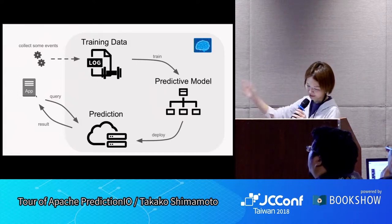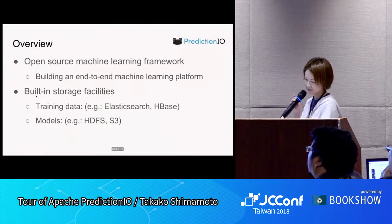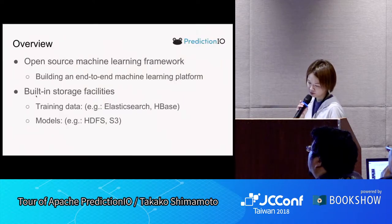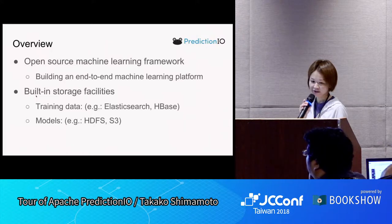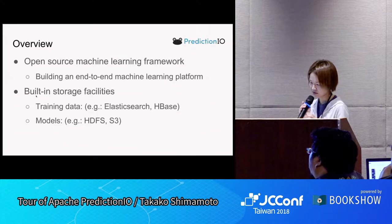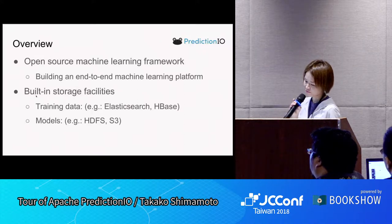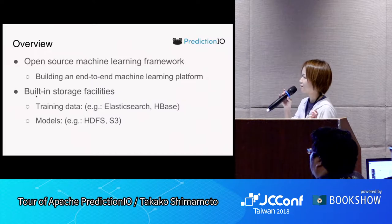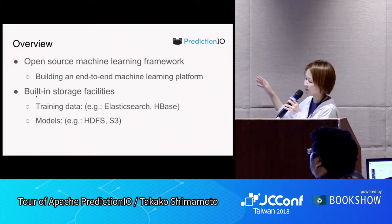So that's where it comes in — PredictionIO. PredictionIO is an open source machine learning framework based on scalable open source services such as Apache Spark, Elasticsearch, Apache HBase, and Spray. Unfortunately, Spray is no longer maintained, so we are working on migrating our application from Spray to Akka HTTP.